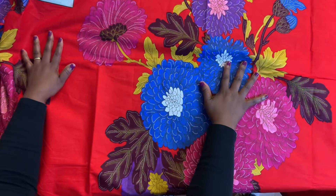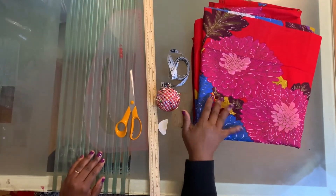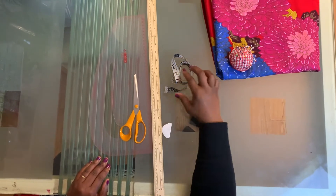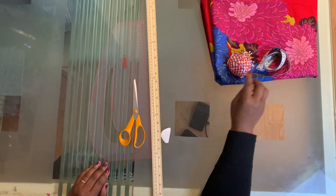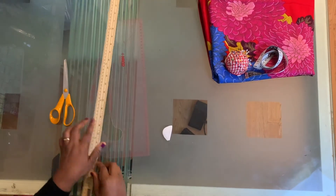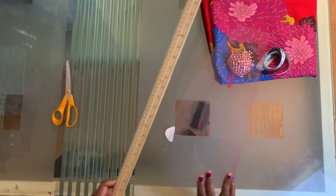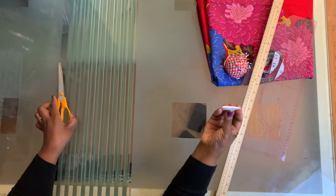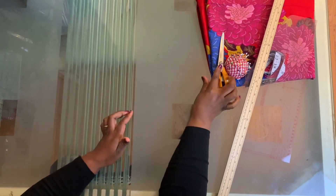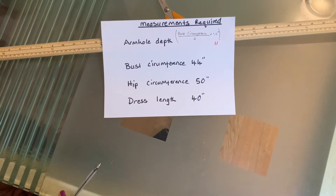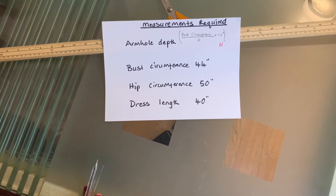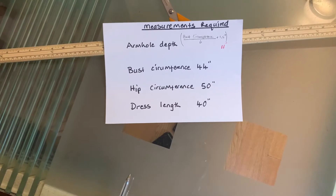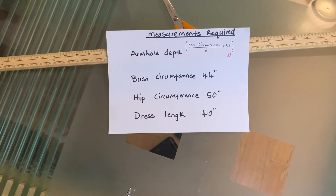Let's get into the designing, cutting, and sewing of this kaftan dress. You're going to need your fabric, pins, a tape measure, a pattern master, a straight ruler, tailor's chalk, and a pair of scissors.